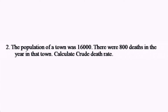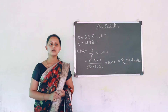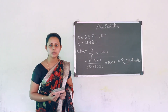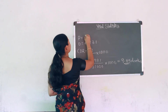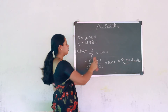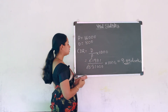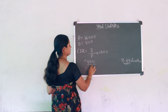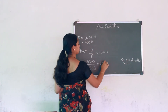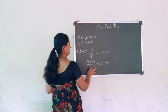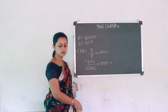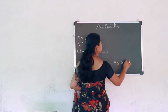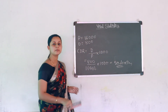Problem 2 on CDR: The population of a town was 16,000 and there were 800 deaths in the year. Calculate the crude death rate. Solution: CDR = (800 / 16,000) × 1000 = 50 deaths per 1000 individuals.